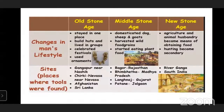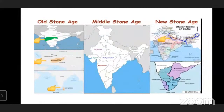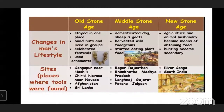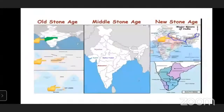With the help of this map, Old Stone Age sites: Gangapur near Nashik, Chirki Nevasa - both in Maharashtra, plus Afghanistan and Sri Lanka. Middle Stone Age evidences were found in Bangal in Rajasthan, Bhimbetka in Madhya Pradesh, Langhnaj in Gujarat, and Patne in Chalgaon. New Stone Age evidences were found near the River Ganga - the blue line on the map - and in South India.